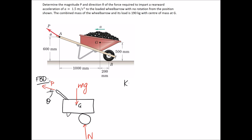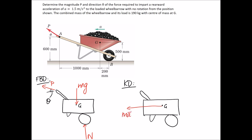We can now draw the kinetic diagram. The center of gravity G sits in the same place. We're looking for a rearward acceleration of 1.5 meters per second squared — this is the translational or linear component of the acceleration. If it's rearward, it points backwards along the flat ground, so we call this mA̅. We're also told there's no rotation, which means alpha equals zero.